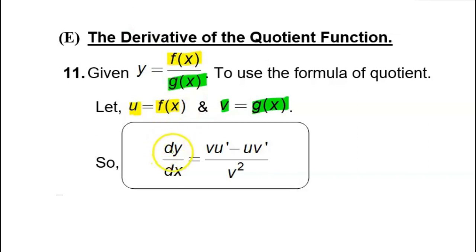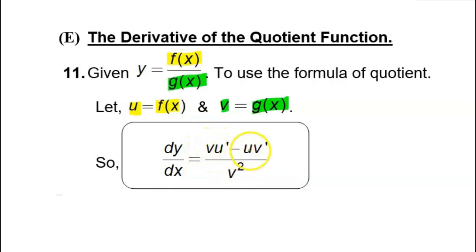So, to find dy over dx, it is equal to v·u' minus u·v', all over v squared.